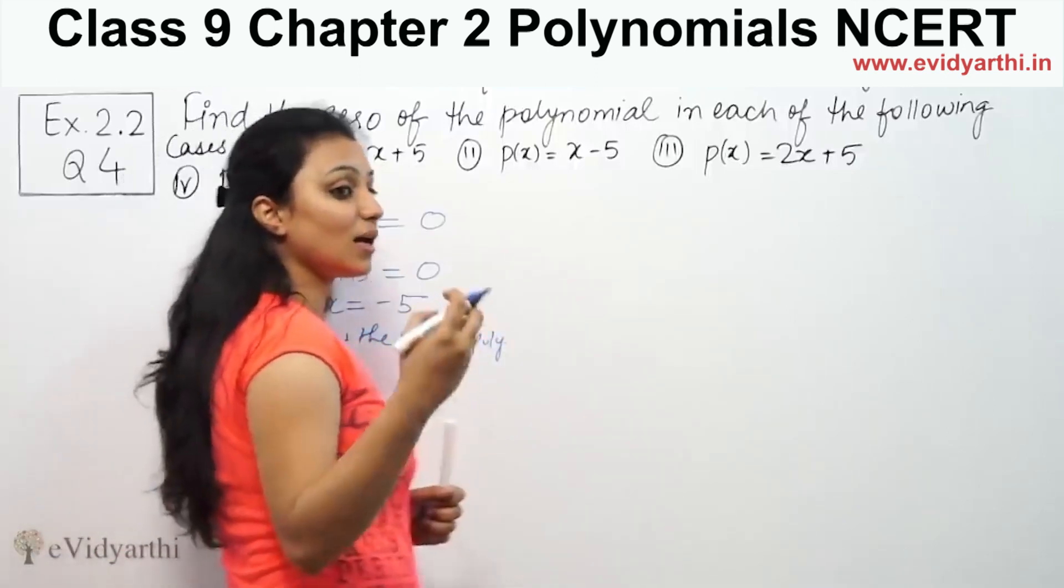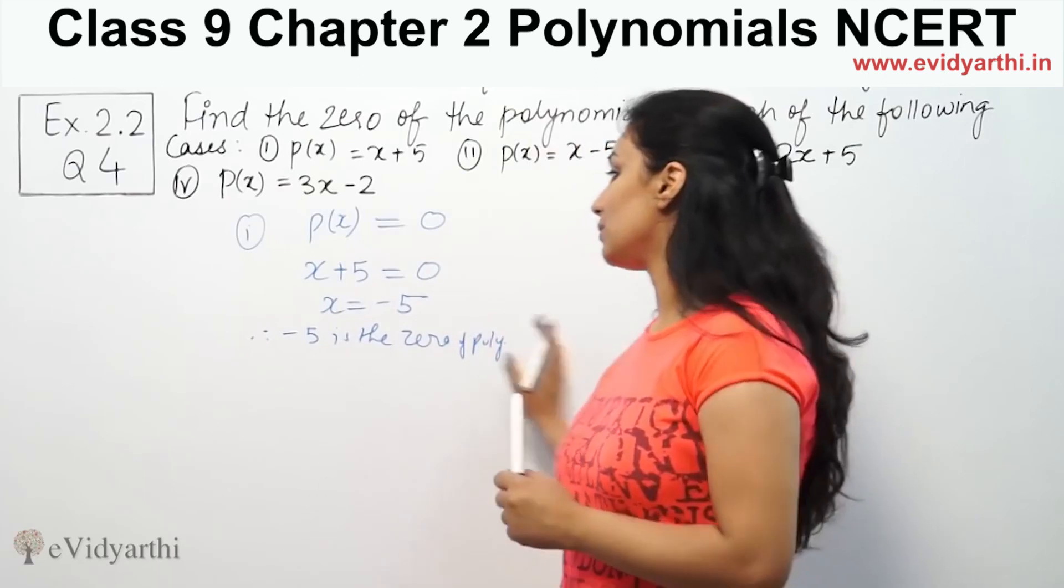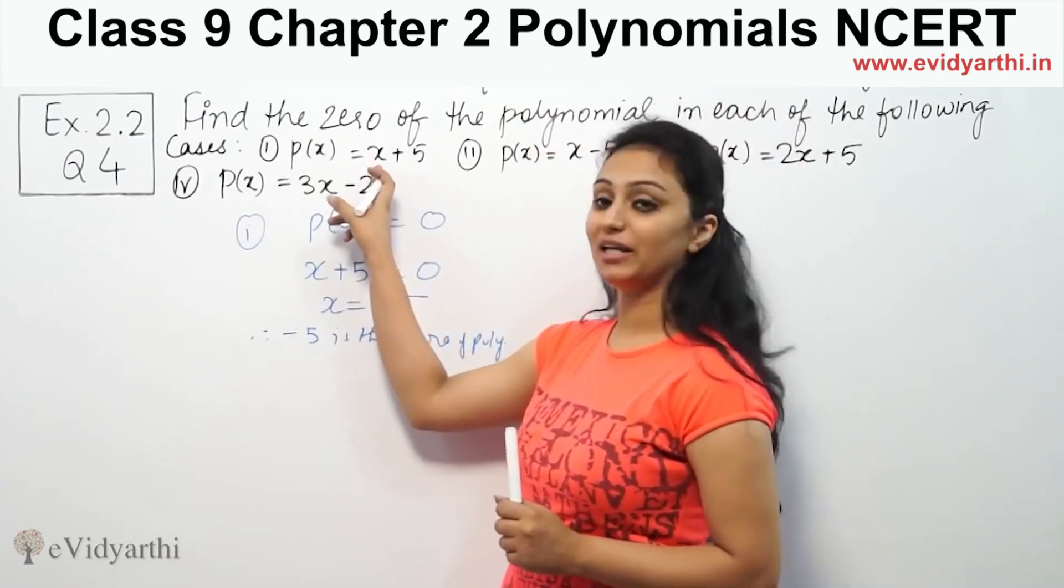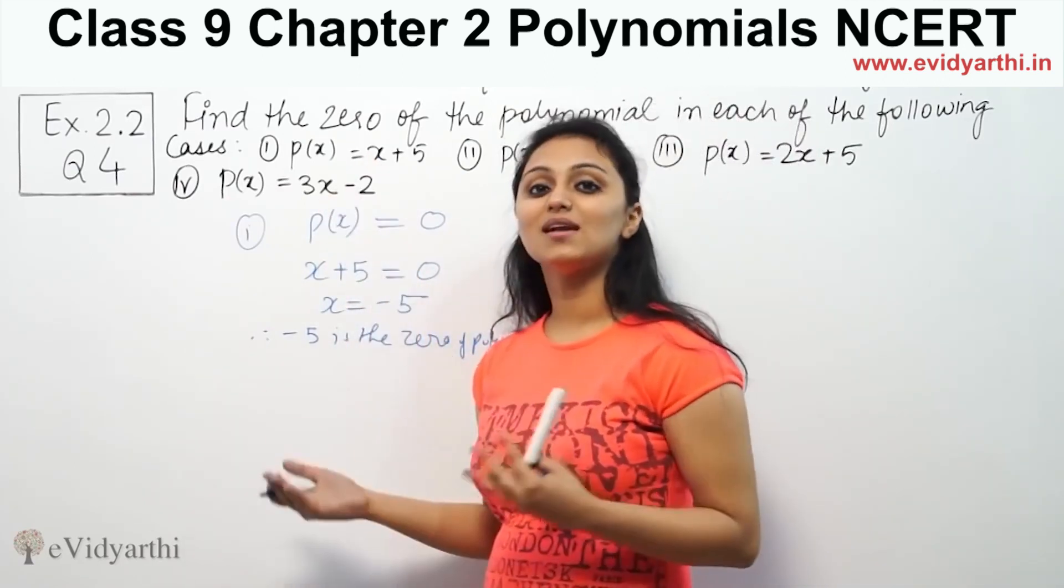If we substitute this value in the polynomial, then the answer will be zero. Suppose we add minus five here, then the answer is zero. So we find the zeroes.